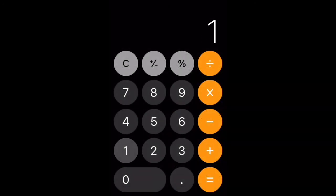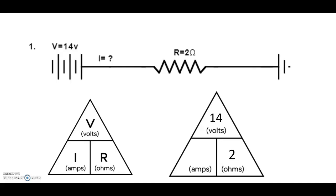Okay, so I'm going to punch in 14 divided by 2 equals 7. So we now know that the current flow in this circuit that has 14 volts going through a 2 ohm resistance, we now know that the current flow would be 7 amps.